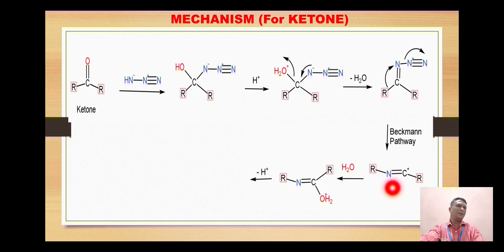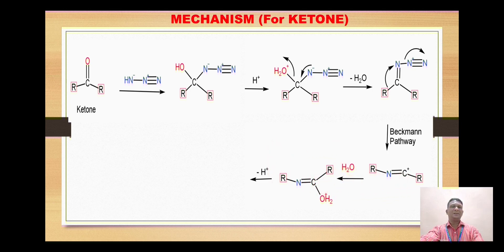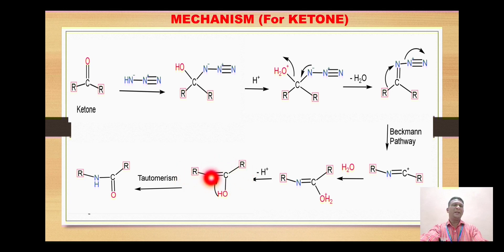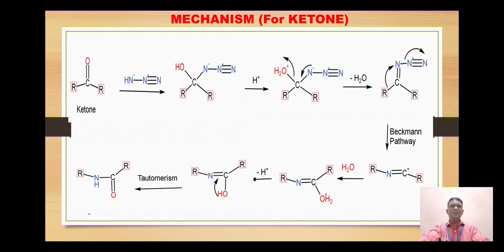This gives formation of a carbocation. When treated with water, the oxygen of water attacks this carbon, giving an intermediate that releases a proton, forming the corresponding hydroxy group. In this molecule there is a double bond and a hydroxy group, making it an enol. As I mentioned in previous videos, whenever there is an enol it gets converted into the corresponding carbonyl group — here the enol converts into the C-O-N-H group (amide) by migration of the proton from the hydroxy group to nitrogen.